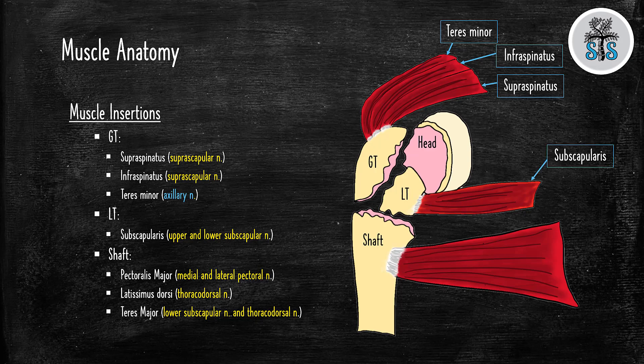Now, the subscapularis inserts on the lesser tuberosity and is innervated by the upper and lower subscapular nerve. Lastly, it is going to be the intertubercular groove insertions of the pectoralis major, latissimus dorsi, and the teres major. The pec major is innervated by the medial and lateral pectoral nerves. The lat is innervated by the thoracodorsal nerve, and the teres major is innervated by the lower subscapular nerve and thoracodorsal nerve.